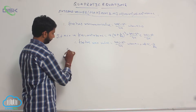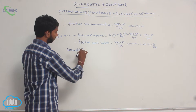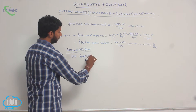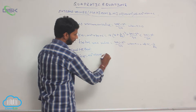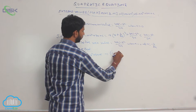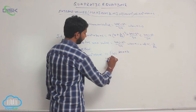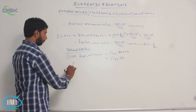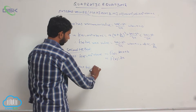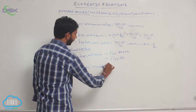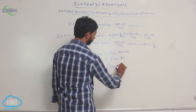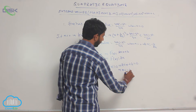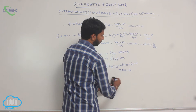Second method: Let f of x equal to a x squared plus b x plus c. Then f dash x equals 2a x plus b, and f double dash x equals 2a. For maximum or minimum, f dash x equals 0, which gives 2a x plus b equals 0, so x equals minus b by 2a.